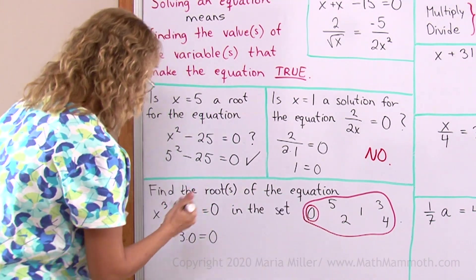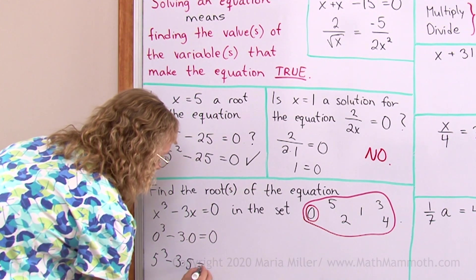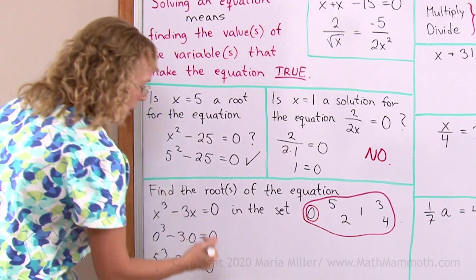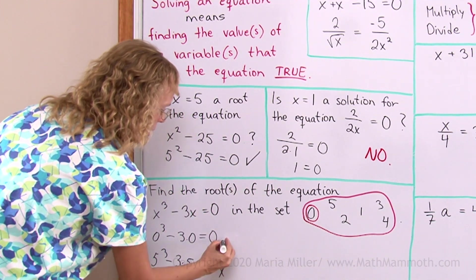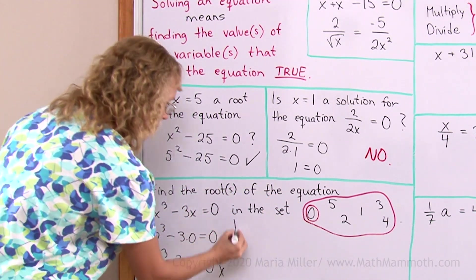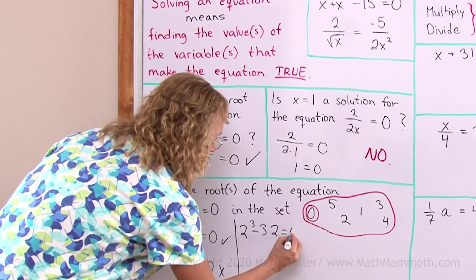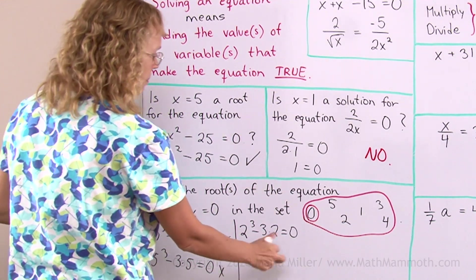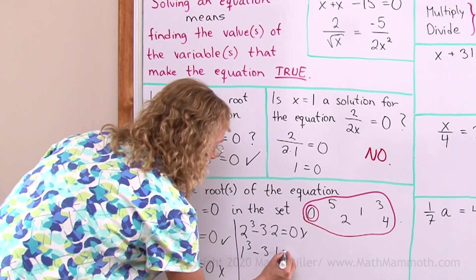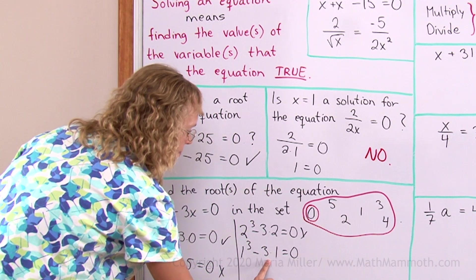Then I'll try 5. 5 to the 3rd power minus 3 times 5 equals 0. This is 125. This is 15. Nope. This is a false equation now. So that didn't work. Then I try 2. 2 to the 3rd power minus 3 times 2. This is 8. This is 6. Nope. Then 1. 1 to the 3rd power minus 3 times 1. This is 1. This is 3. Nope.